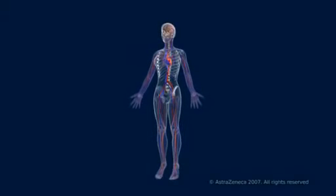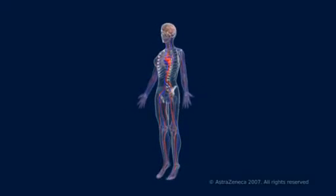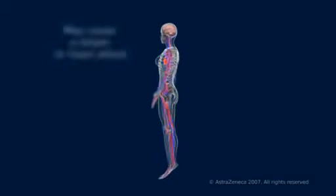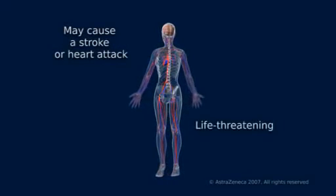As the plaque grows into the artery opening, it squeezes the blood through an ever smaller gap. The resulting increase in pressure at the narrowing can damage the capsule covering the plaque, which may then rupture, resulting in a blood clot that can completely block the artery. Depending on the location of the blockage, the consequences, such as stroke or heart attack, may be severe and could be life-threatening.